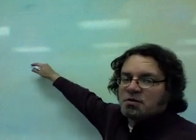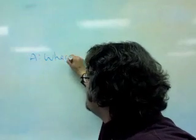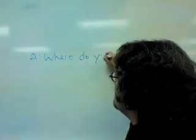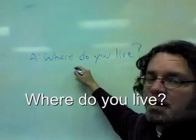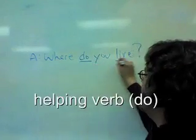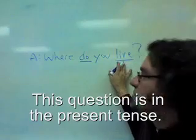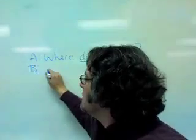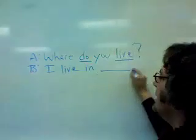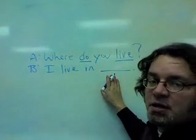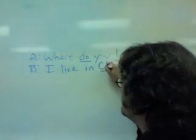If, for example, someone asks you this question: Where do you live? Here's the helping verb, and here is the main verb. This question is in the present tense. The answer is: I live in — and put the name of the city or country here. I live in Chicago.